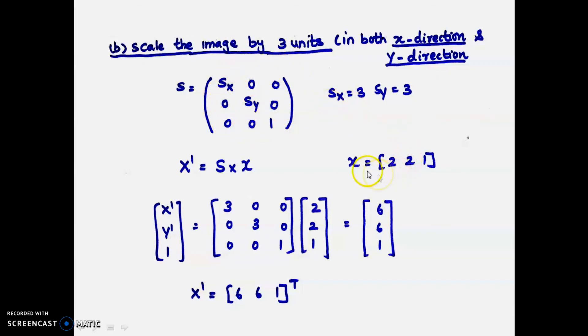The image point is (2, 2, 1). x' = S × x. Substitute S and the image point here. Do the matrix multiplication, you will get the new coordinates [6, 6, 1]. So x' = [6, 6, 1]^T or x' = (6, 6).